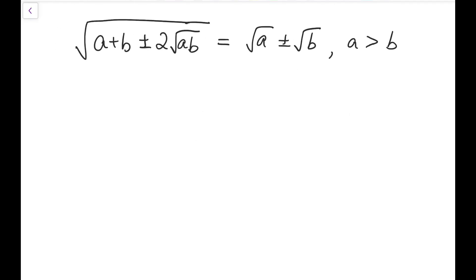So basically what I've done just now for the past few minutes can be summarized by this formula, which is that the square root of a plus or minus 2 times square root of ab can be simplified into just square root of a plus or minus square root of b by fixing a to be a number that is larger than b.